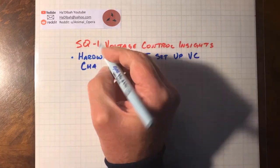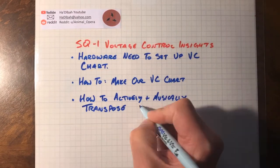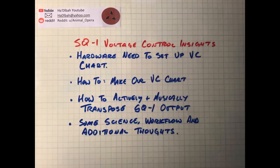The plan here is this: we're going to look at voltage control insights. First and foremost, you guys asked how did I make that chart from lectures two and three. We're going to talk about the hardware you need to make that voltage control chart, then step through the chart — how to actually do it utilizing the MS-20 or the SQ-1. Then more questions came about transposing the SQ-1/MS-20 integration — how do I make the keyboard transpose from what's coming from the SQ-1? I'll show you how, and give you deep-down secrets as to why it works that way.